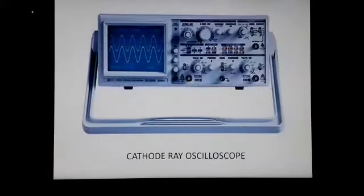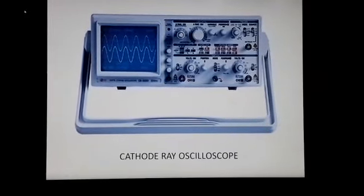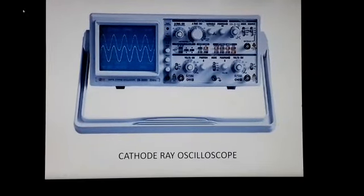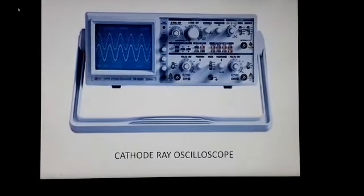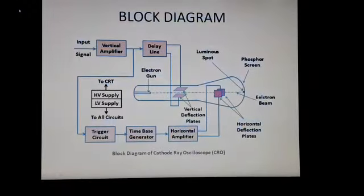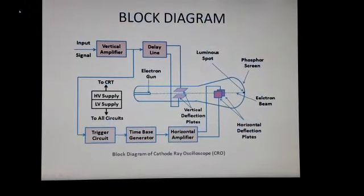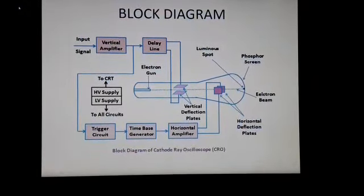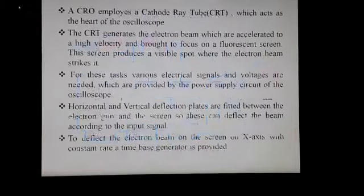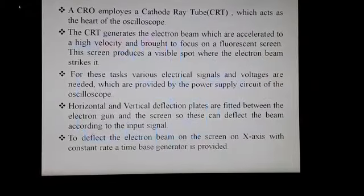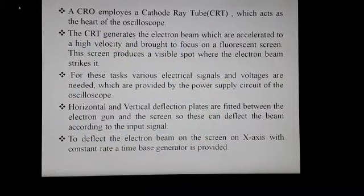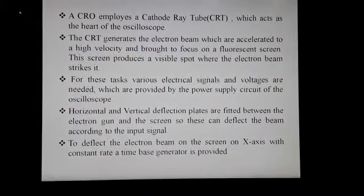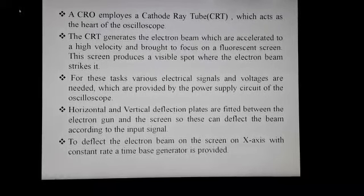This is a visual representation of the cathode ray oscilloscope. This is the block diagram of the cathode ray oscilloscope. A CRO employs a cathode ray tube which acts as the heart of an oscilloscope.